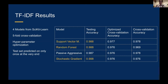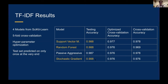We got pretty close to 99% accuracy on our holdout test set, testing on it just once — so we're pretty sure we weren't overfitting. But we sat down and thought: if we have classifiers that are trained with good data and performing well, what next? So we decided to go to the wild — we gathered another 8,000 abstracts from Chinese authors across about a thousand different journals.